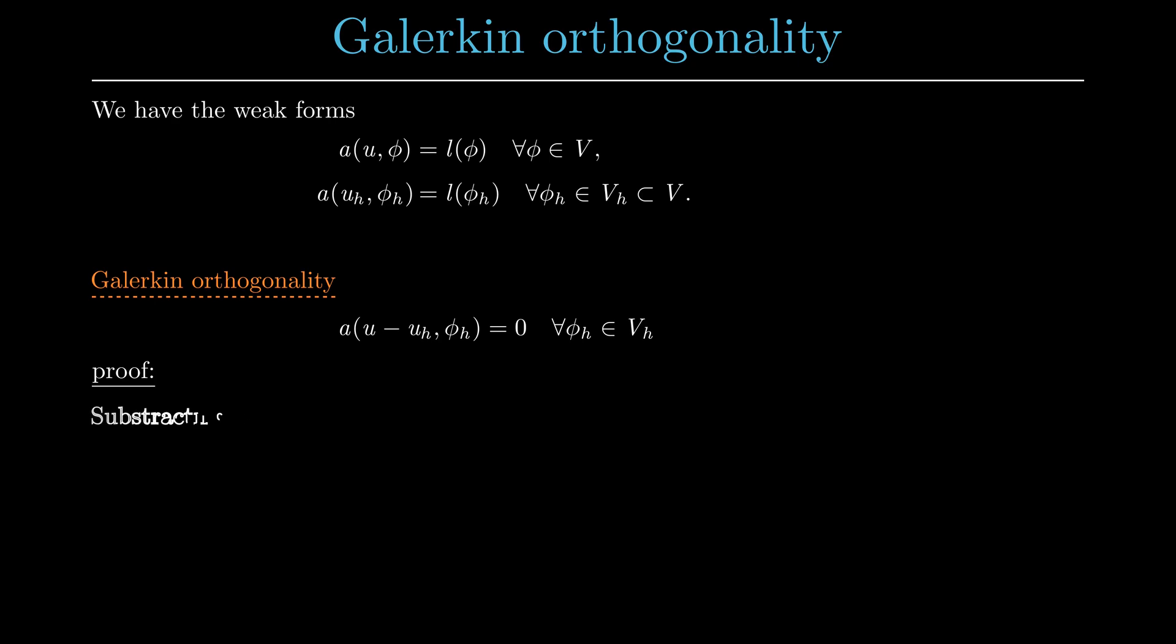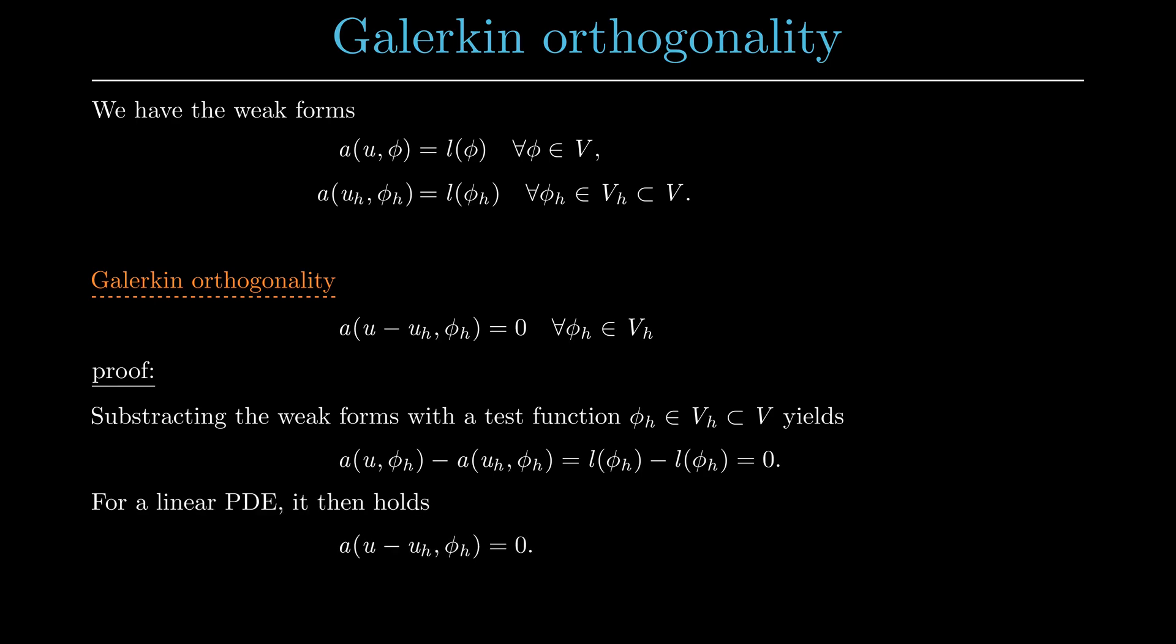To prove the Galerkin orthogonality, we just need to subtract both weak forms and use the fact that the bilinear form a is linear in the first argument.